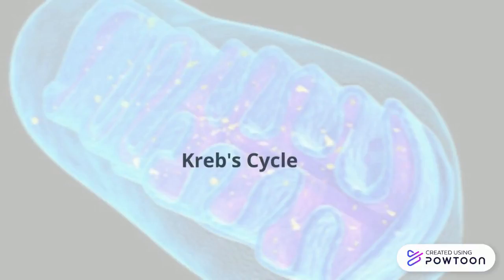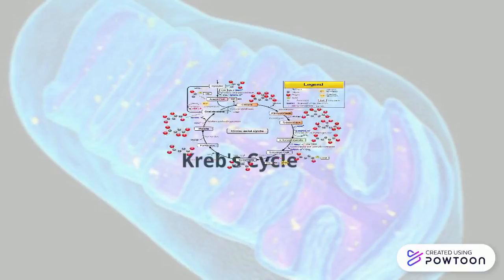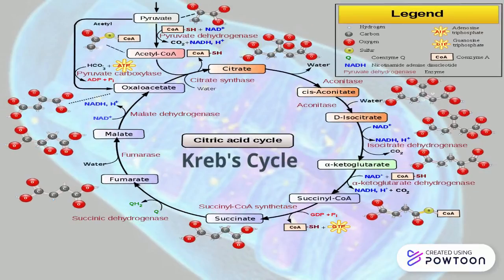The Krebs cycle, also known as the citric acid cycle, is the continuation of aerobic respiration.